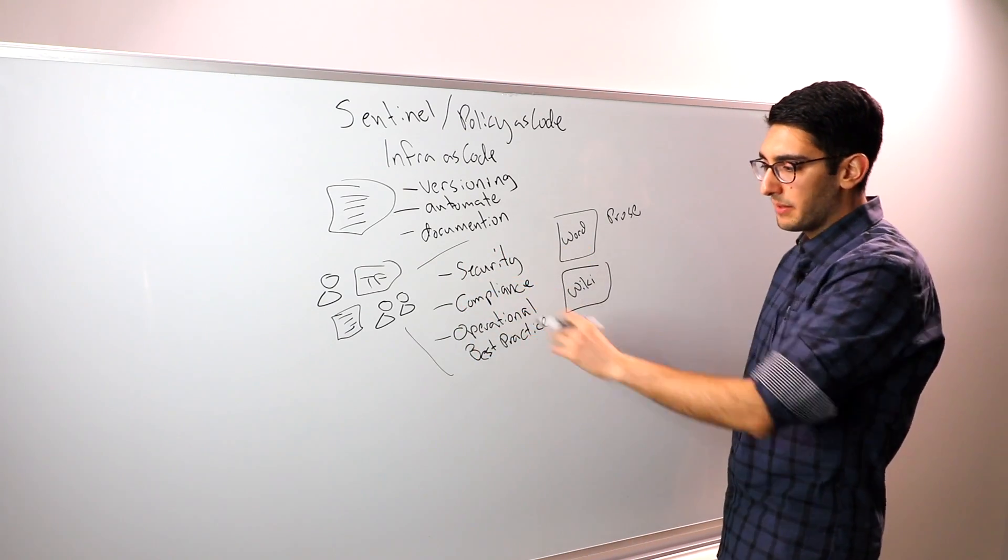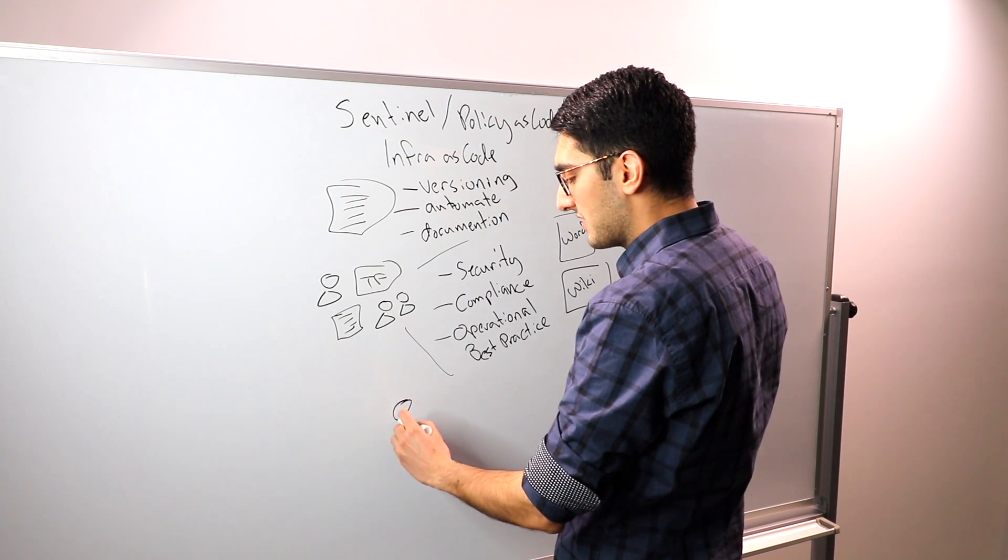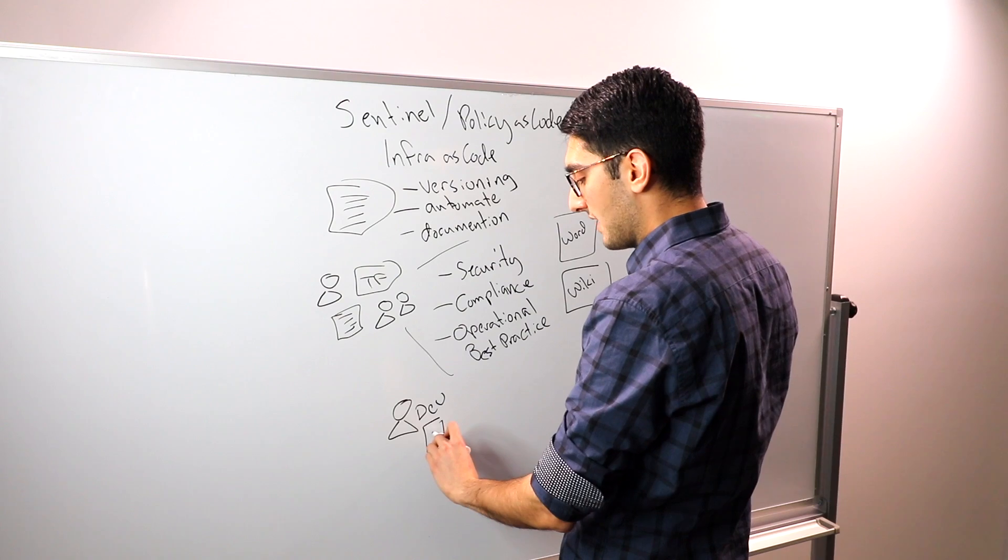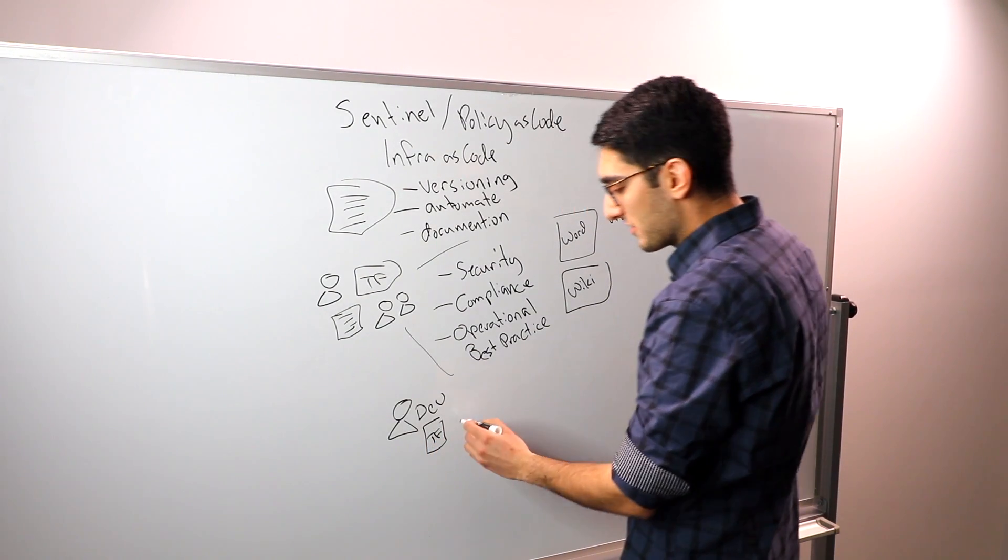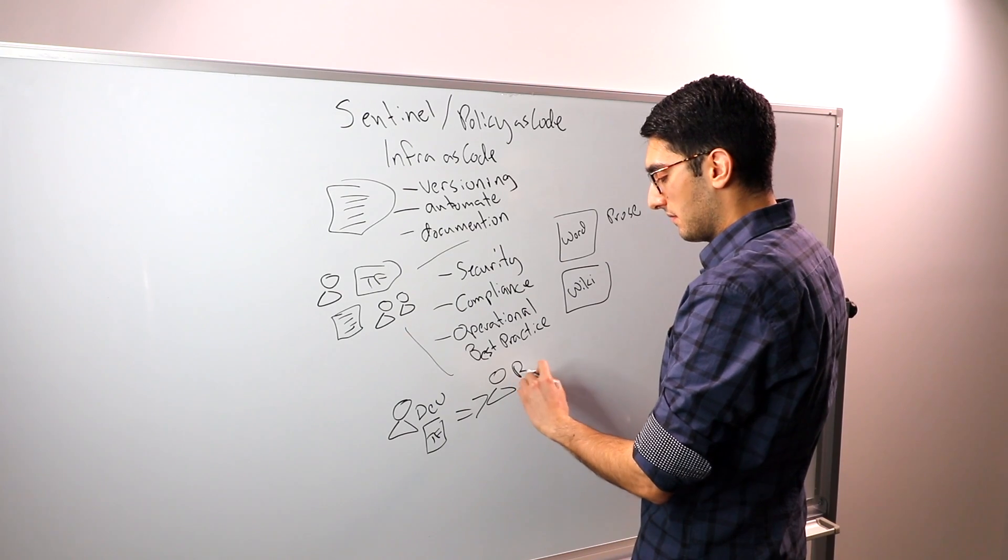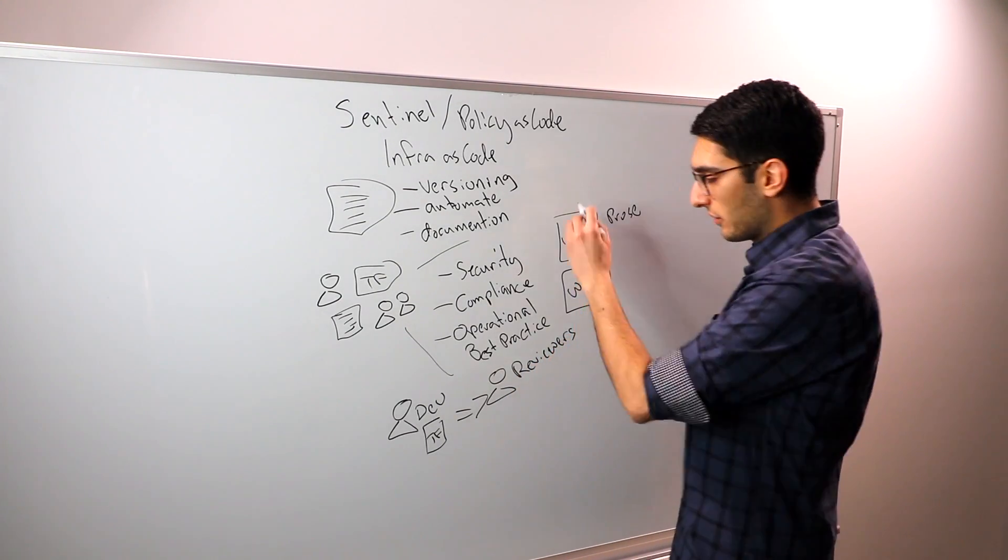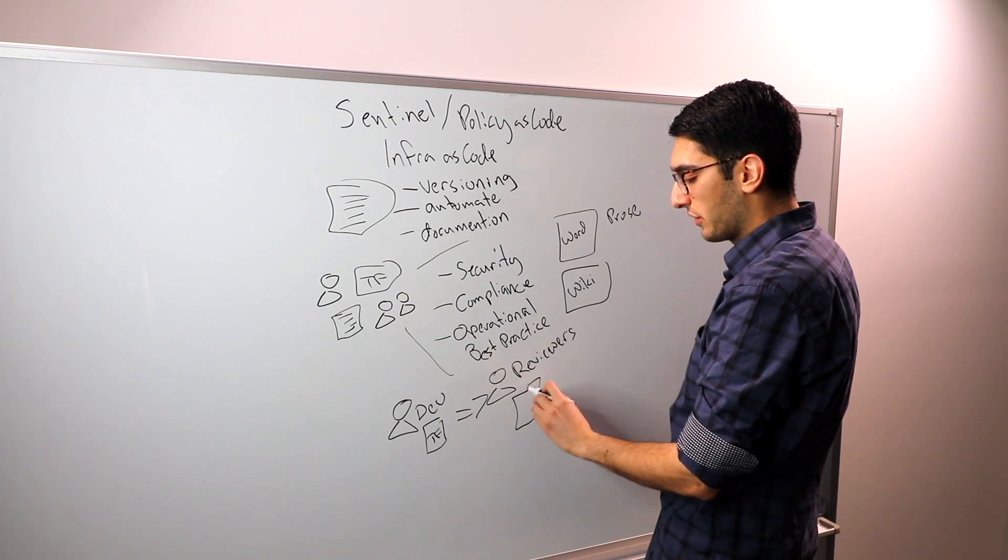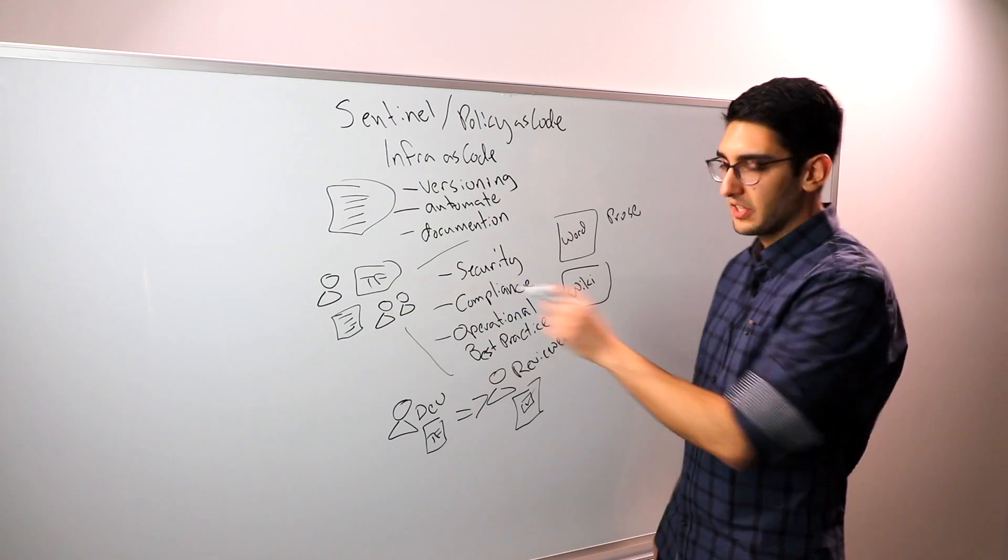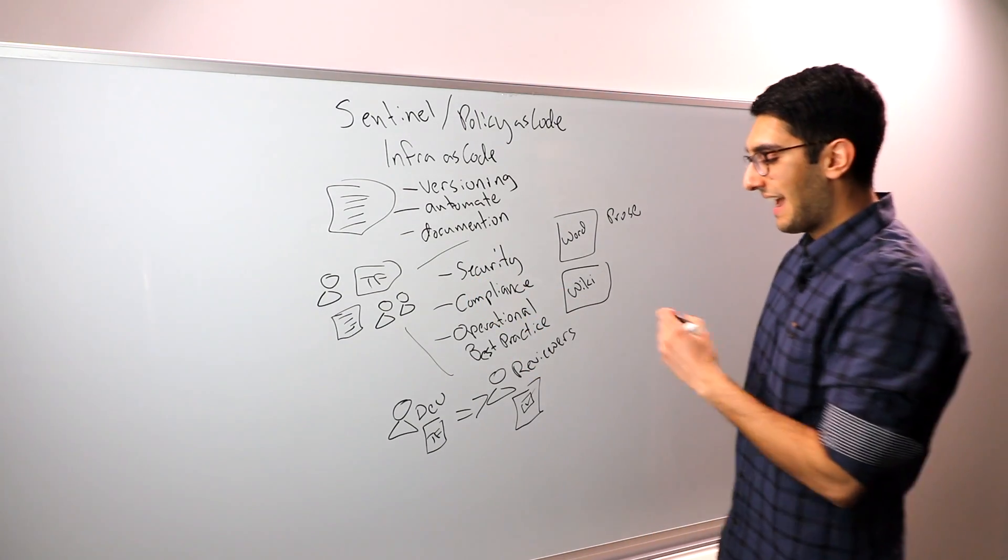What we often see is how these get implemented is through a waterfall process. You might have a series of developers who are writing Terraform code itself, who are then submitting this to a set of reviewers, who are then checking off that we're following these processes. They will go through the checklist and say, does this thing follow our security best practices and our compliance best practices and our operational best practices?